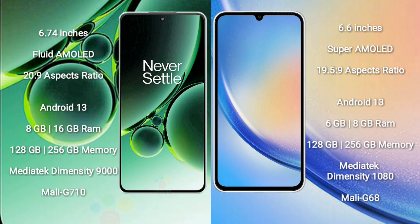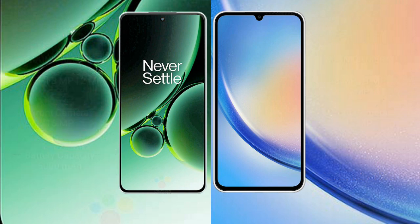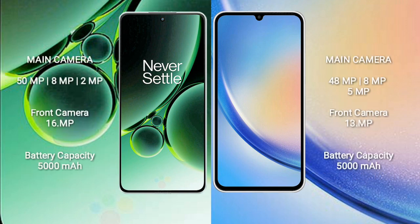OnePlus Nord 3 features the MediaTek Dimensity 9000 processor with Mali-G710 GPU. Samsung Galaxy A34 features the MediaTek Dimensity 1080 processor with Mali-G68 GPU. OnePlus Nord 3 has a rear triple camera setup: 50MP plus 8MP plus 2MP, and a 16MP front camera.